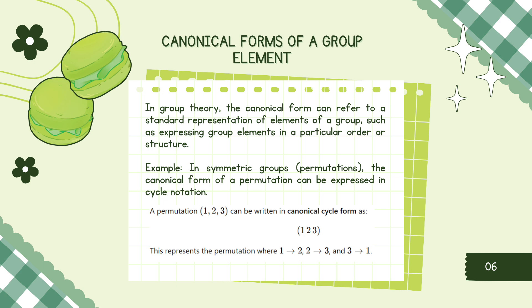Next is canonical forms of a group element. In group theory, the canonical form can refer to a standard representation of elements of a group, such as expressing group elements in a particular order or structure. Example: in symmetric groups or permutations, the canonical form of a permutation can be expressed in cycle notation. Example: a permutation 1, 2, 3 can be written in a canonical cycle form as 1, 2, 3. This represents the permutation where 1 maps to 2, 2 maps to 3, and 3 maps to 1.